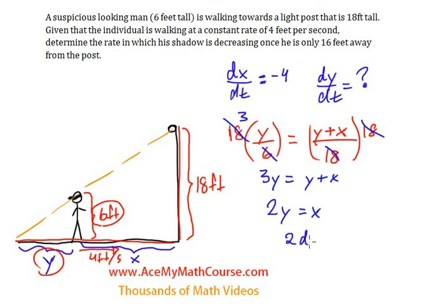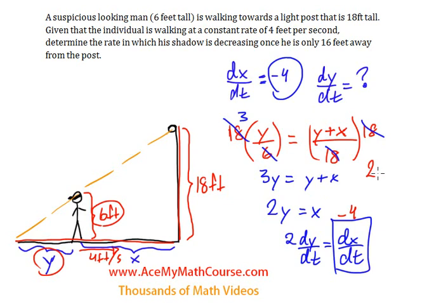So I get 2(dy/dt) equals dx/dt. Remember that we're taking the derivative with respect to t, because this is a related rates problem. Now I can plug in dx/dt, which is negative 4. So 2(dy/dt) equals negative 4. Divide both sides by 2, so I get dy/dt equals negative 2.